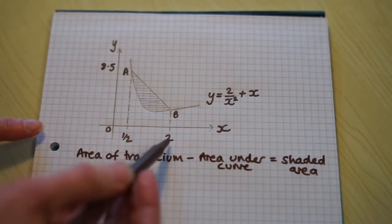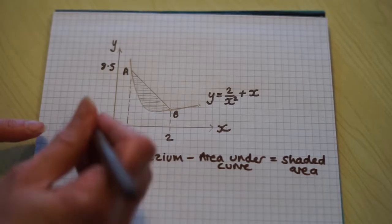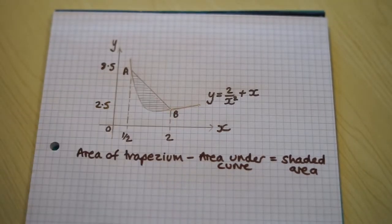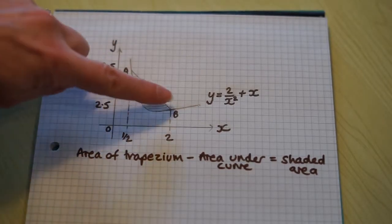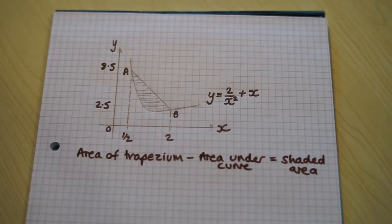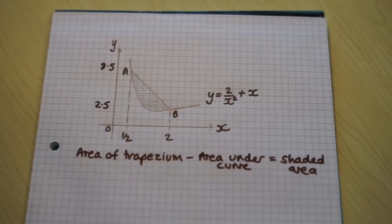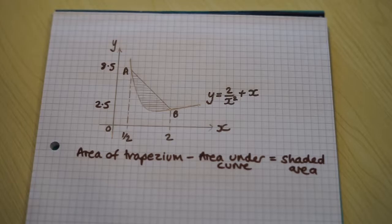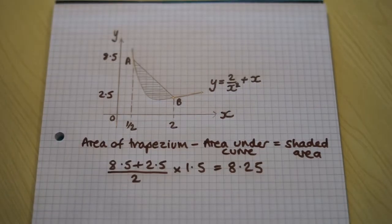When we substitute x equals 2 into the equation, we get y equals 2.5. So this side is 8.5, this side is 2.5. So we can work out the trapezium area by adding these two parallel sides, dividing by 2 and multiplying by the width between them. Let's write this down.